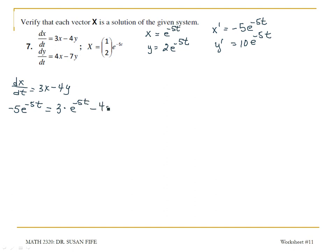minus 4 times y, which is 4 times 2e to the negative 5t. Simplifying the right side gives 3e to the negative 5t minus 8e to the negative 5t. Three take away 8 gives negative 5e to the negative 5t, which equals the negative 5e to the negative 5t on the left side. So that's good.